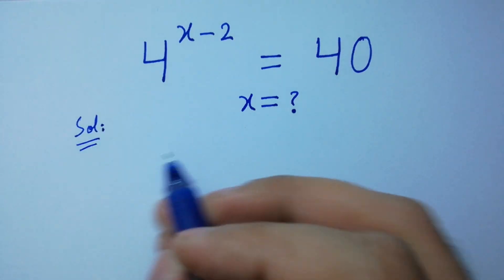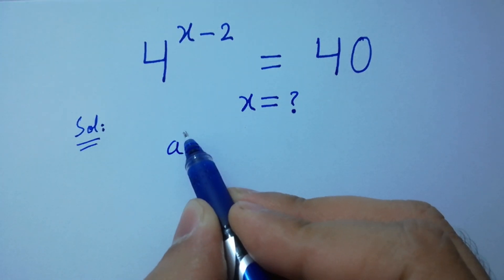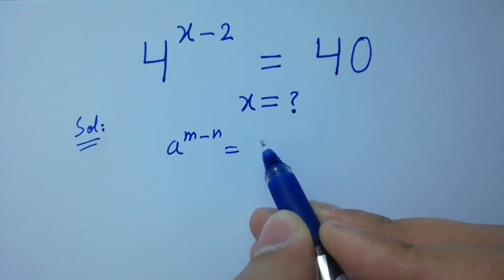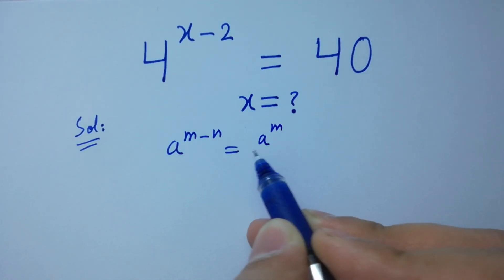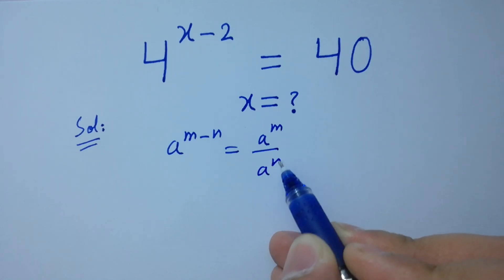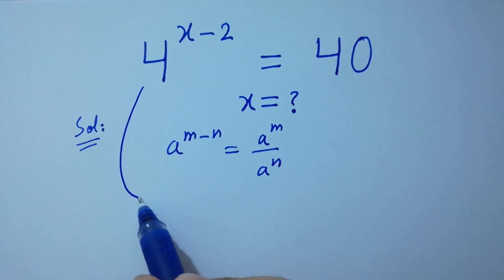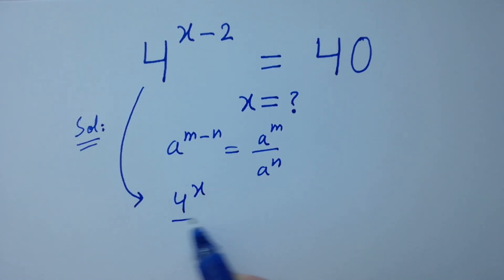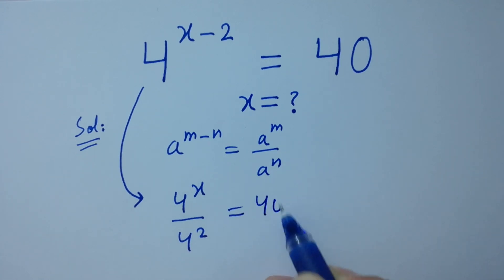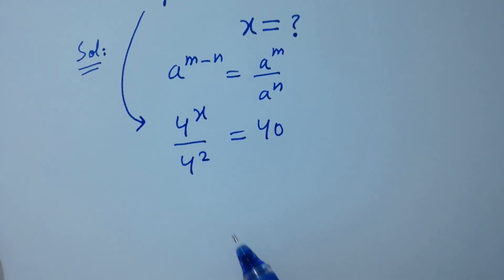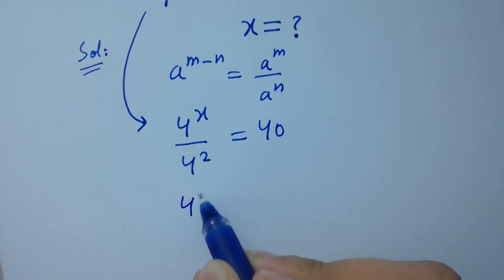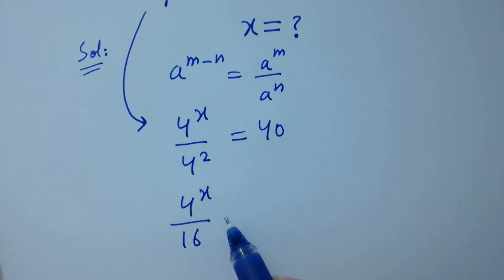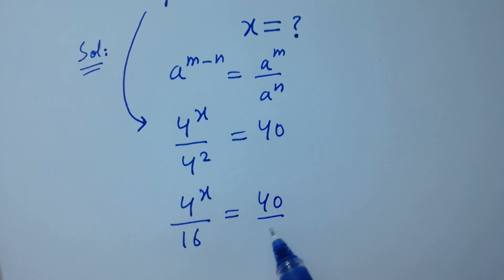As we know, a to the power m minus n equals a to the power m over a to the power n. Then it will be 4 to the power x over 4 to the power 2 equals 40, which is the same as 4 to the power x over 16 equals 40.